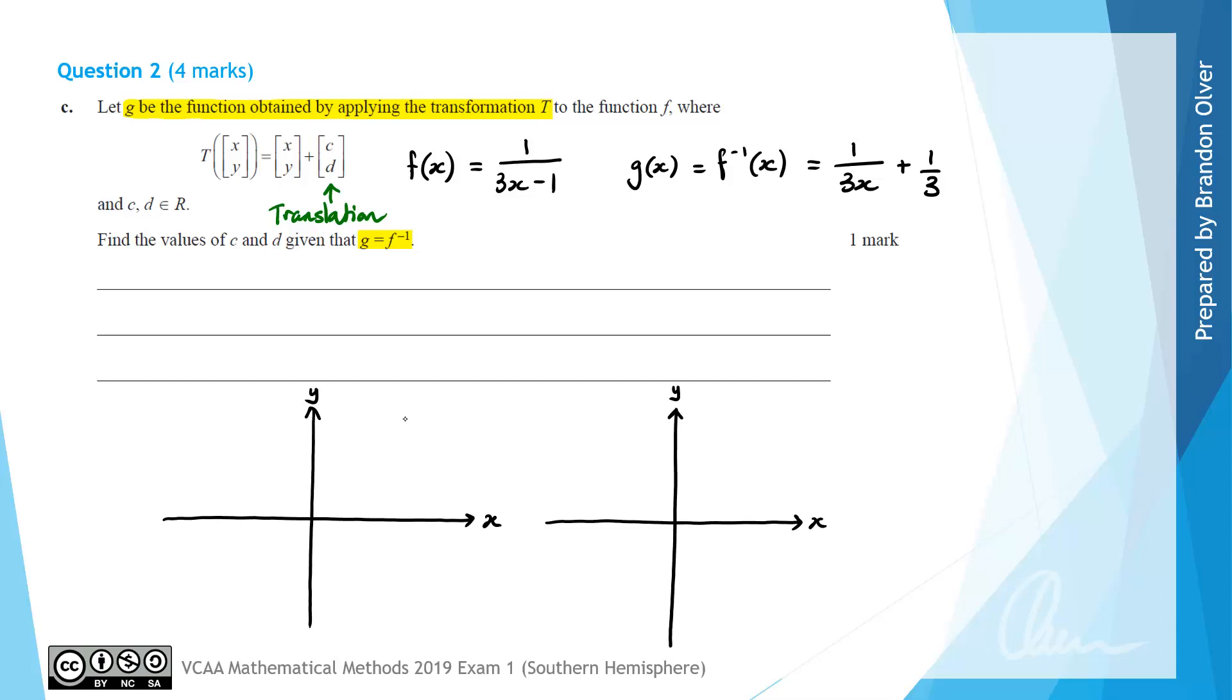I'm going to sketch f(x). When the denominator equals 0, we can see that x equals 1/3 would give that. So our asymptote for this graph is at x equals 1/3. As discussed on the previous slide, there's technically a plus 0 here, so the horizontal asymptote is at y equals 0.